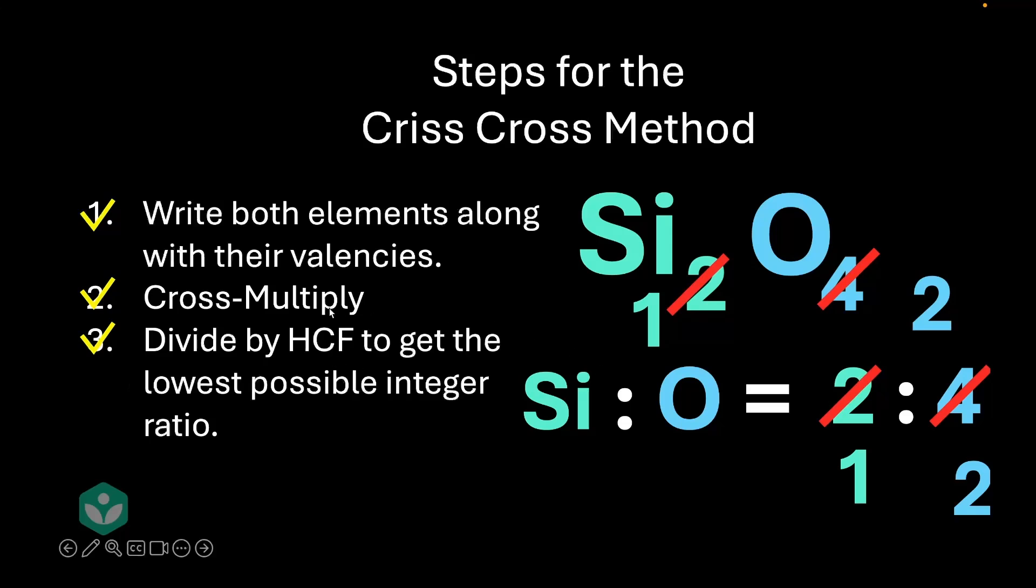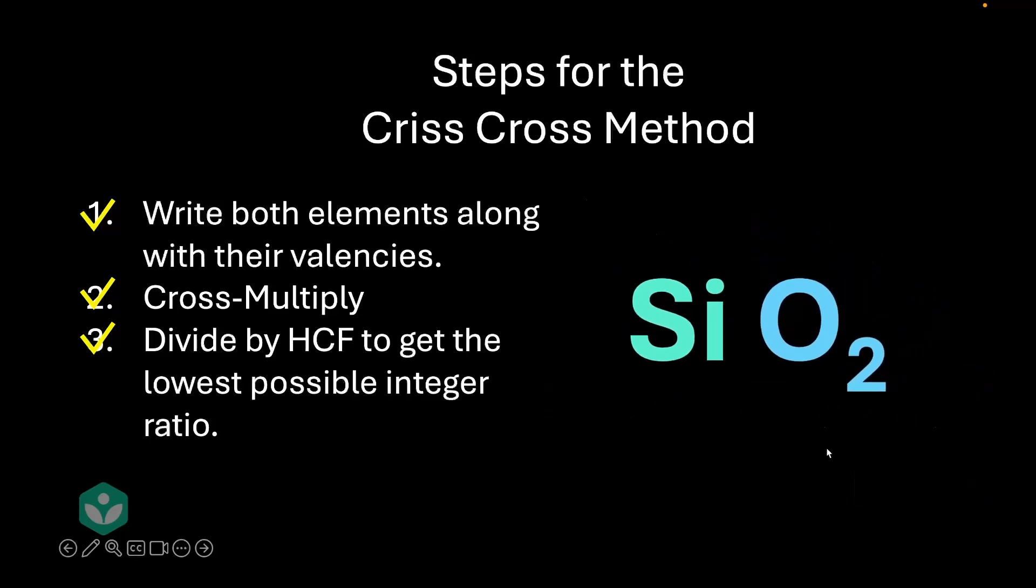Well, maybe some of you are wondering why do you want to divide with HCF? Where did this HCF come up from? Well, if you remind yourself about the mathematics you studied a few years ago, you'd realize that to get the lowest integer ratio in some kind of fraction or ratio, you've got to divide by the highest common factor. Okay, back to the story. So we've gotten Si1O2. Let's get rid of the redundant one and make it neat and clean and call it SiO2.